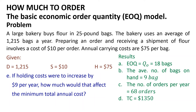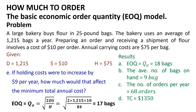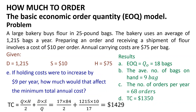The last question is to find the change in minimum total cost if the holding cost increases by $9, meaning H becomes $84 instead of $75. Recalculate Q₀ with the new H: Q₀ = √(2 × 1,215 × 10 / 84) = 17 bags. The corresponding minimum total cost is TC = (17 × 84 / 2) + (1,215 × 10 / 17) = $1,429. This is higher than the previous total by $79. Consequently, if the holding cost increases by $9, the minimum total cost will increase by $79.